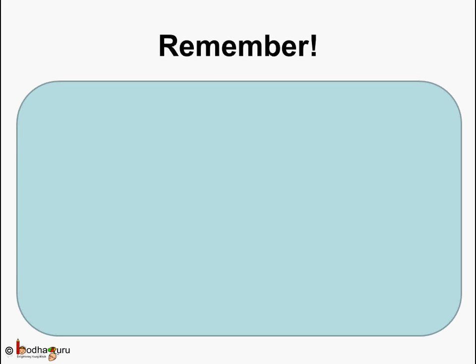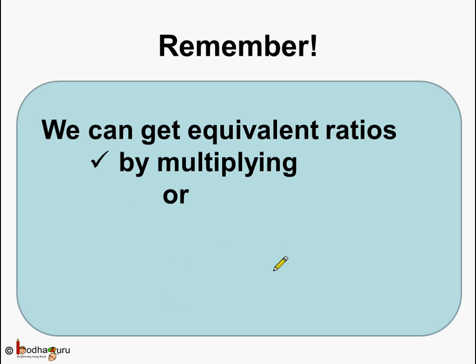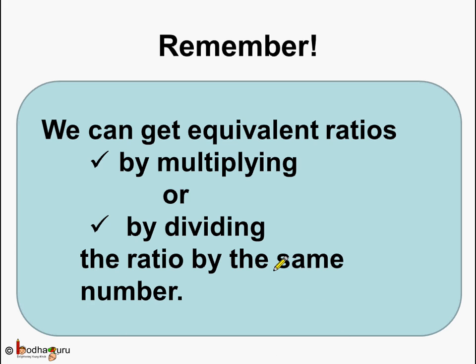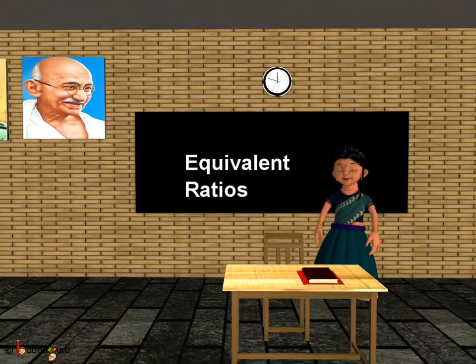Remember, again, we can get equivalent ratios: first by multiplying, or by dividing the ratio by the same number. When the ratio is represented in the form of a fraction as numerator and denominator, we can multiply or divide both the numerator and the denominator by the same number and get an equivalent ratio. That's all for now. Bye-bye children.